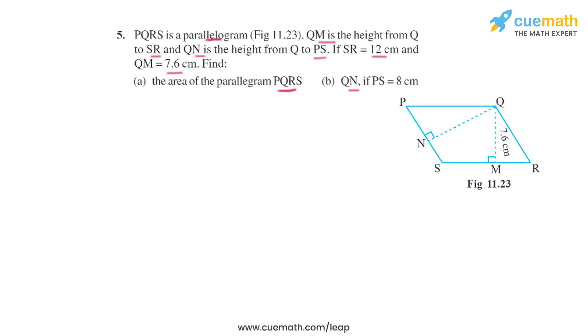If PS equals 8 cm, let's start with the first part. In the first part we have to find the area of the parallelogram PQRS and we know that the formula to find the area is base into height.